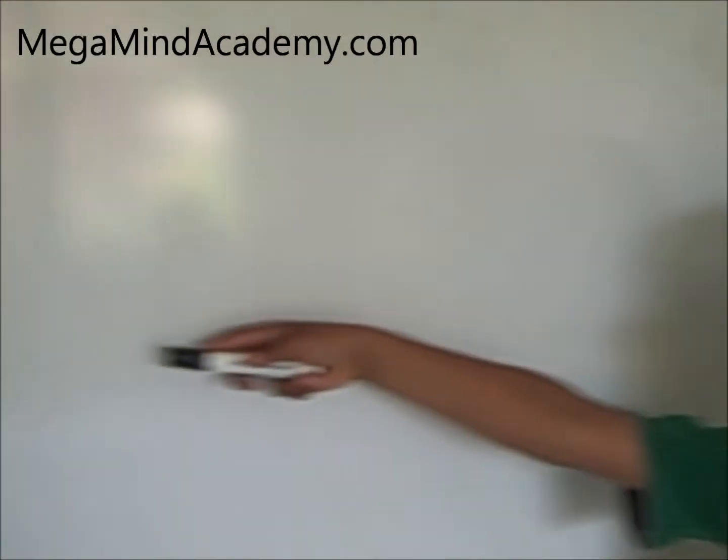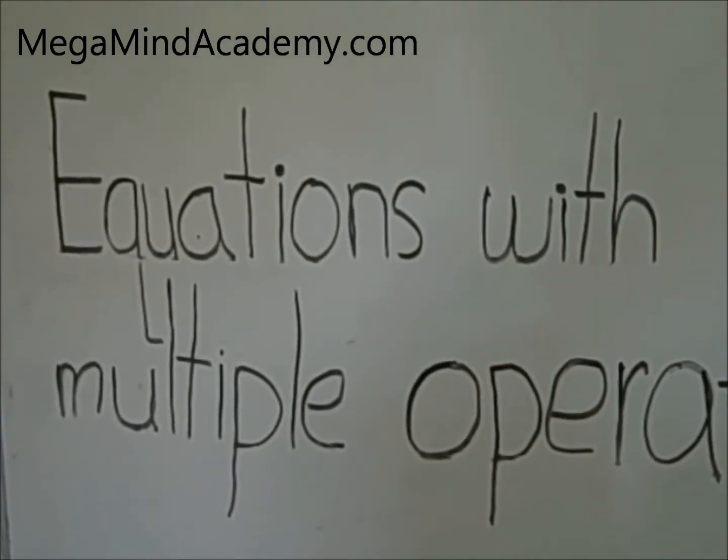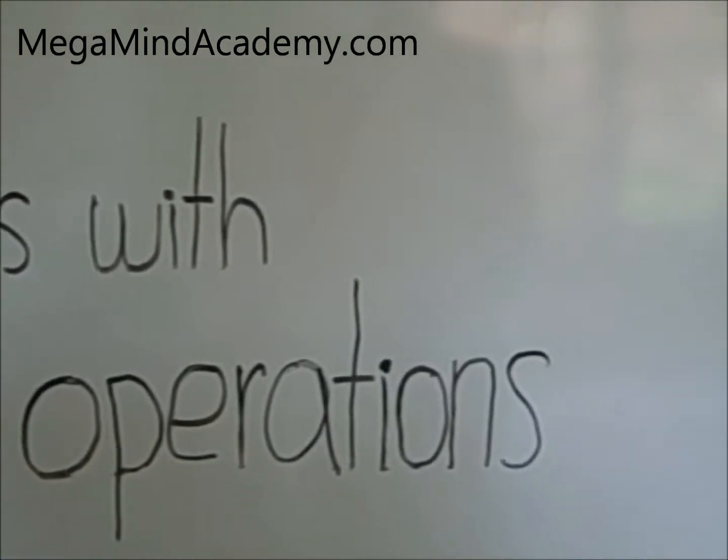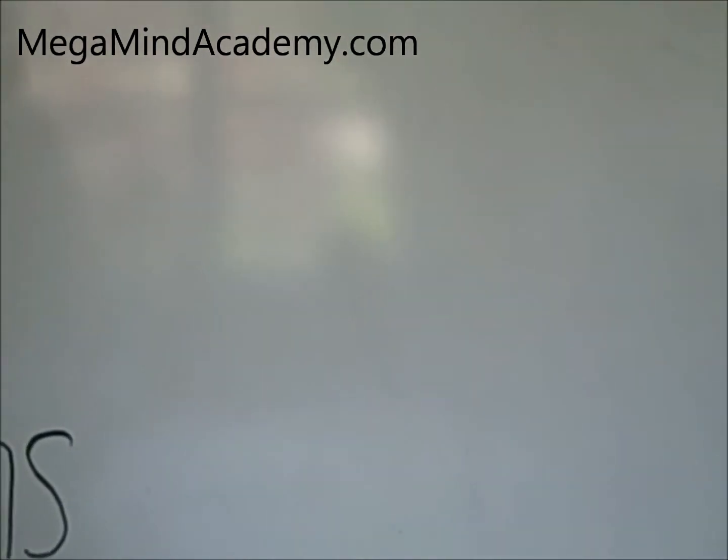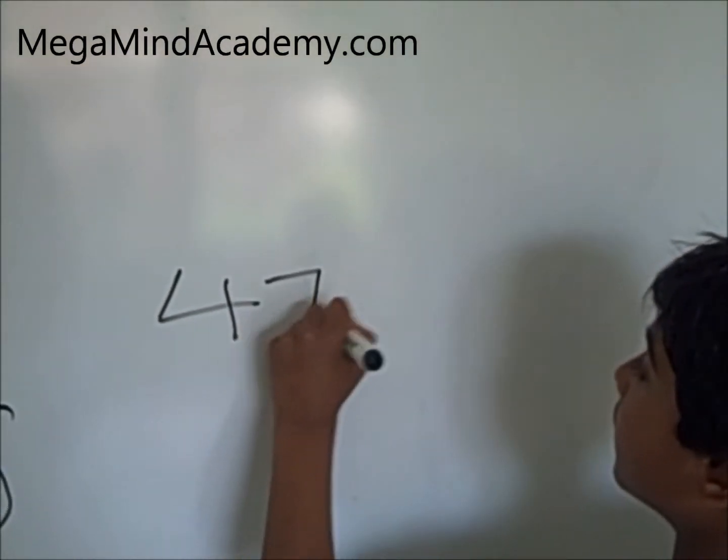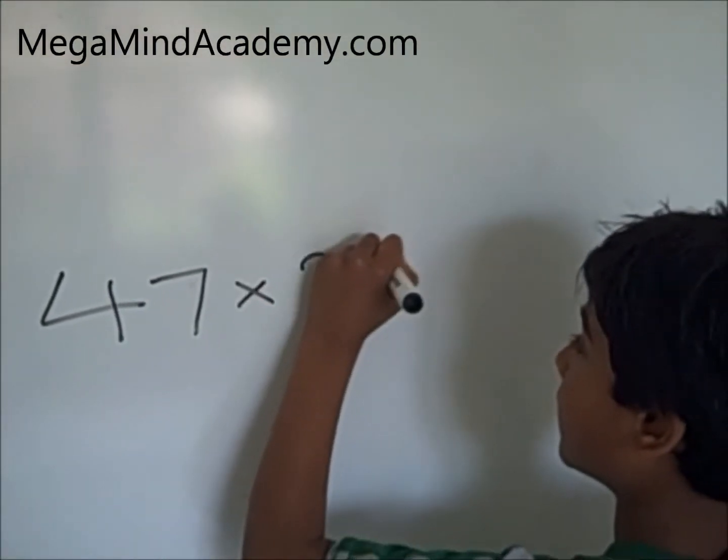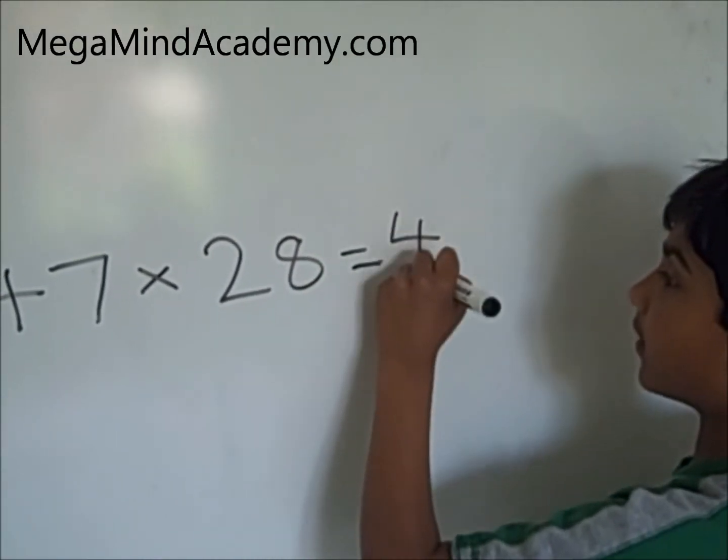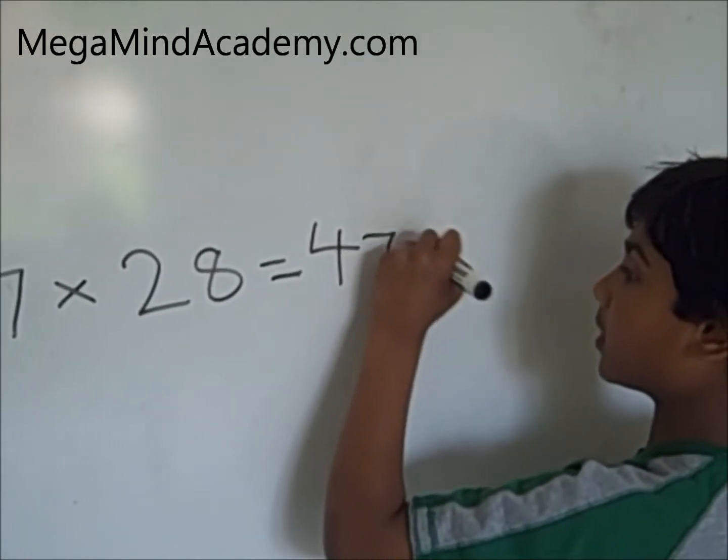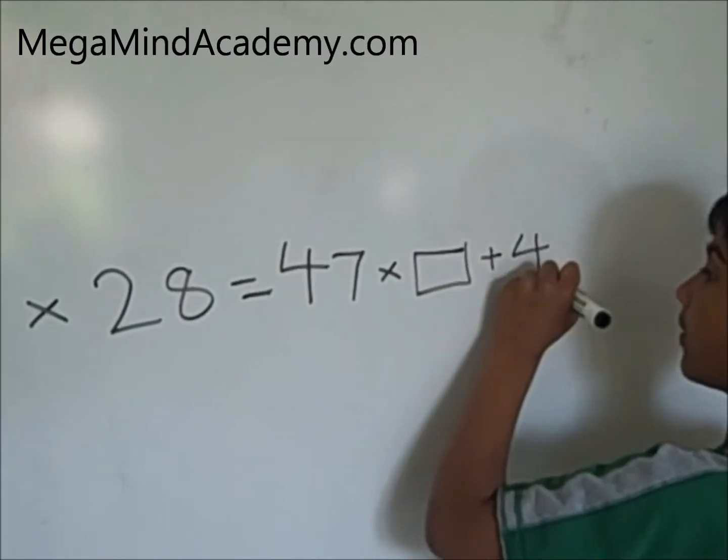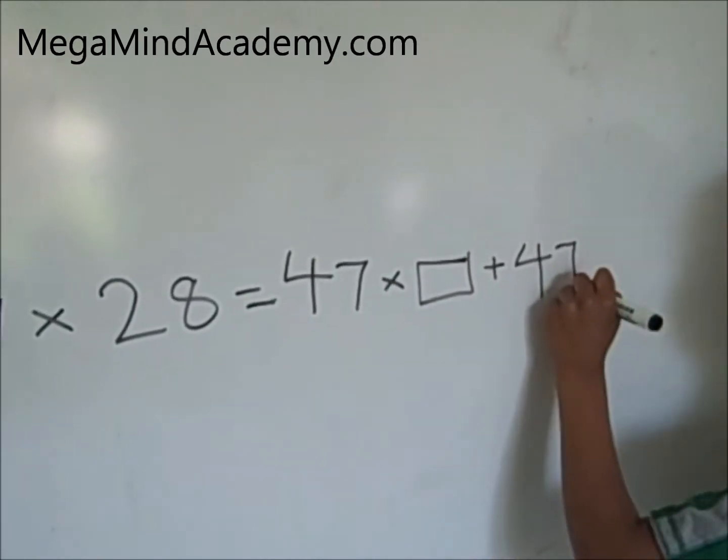Hello, today let's learn about equations with multiple operations. For example, an equation could be 47 times 28 equals 47 times box plus 47 times 2.